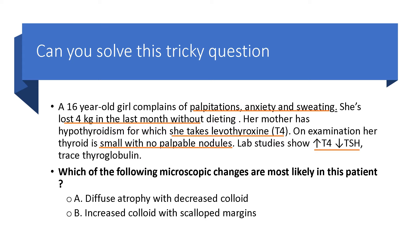The lab values tell us that she has hyperthyroidism. However, the question really asks which of the following microscopic changes are most likely in this patient? The examiner knows that you know she has hyperthyroidism, but wants you to know exactly what the cause is. What would you find on biopsy — diffuse atrophy with decreased colloid, or increased colloid with scallop margins? This depends on figuring out why she has hyperthyroidism.